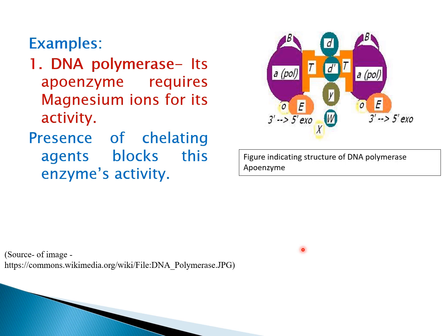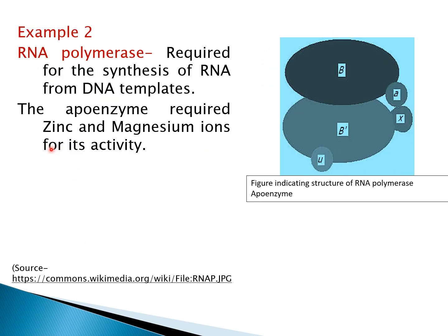Examples of apoenzyme: DNA polymerase requires magnesium ions for its activity. If any chelating agents are added, replication of DNA is stopped because they remove the magnesium ions, making the enzyme inactive. RNA polymerase, required for the synthesis of RNA molecules from DNA templates, also requires magnesium ions and zinc ions for its activity.